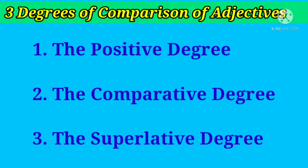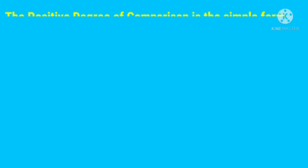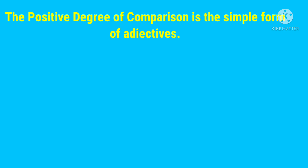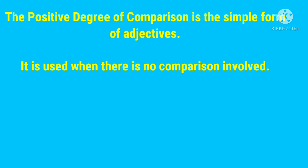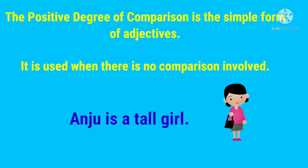The positive degree of comparison is the simple form of an adjective, and it is used when there is no comparison involved. For example, 'Anju is a tall girl' — here we are talking only about one girl and not comparing Anju with any other girl.